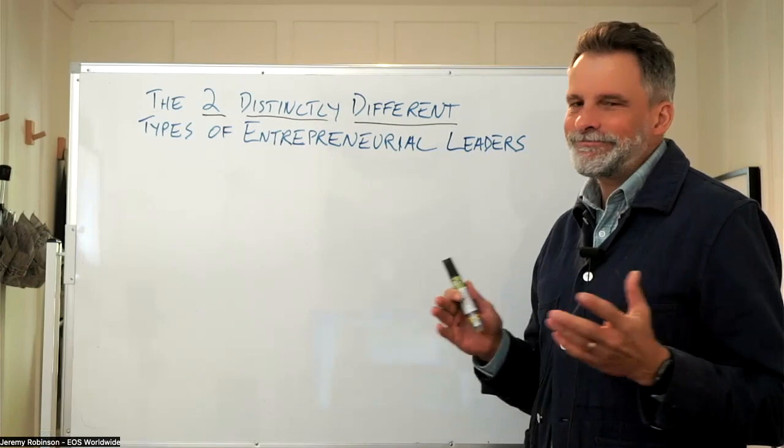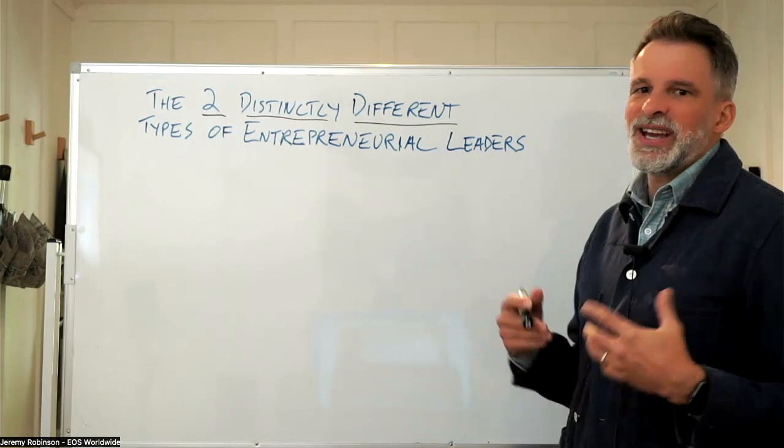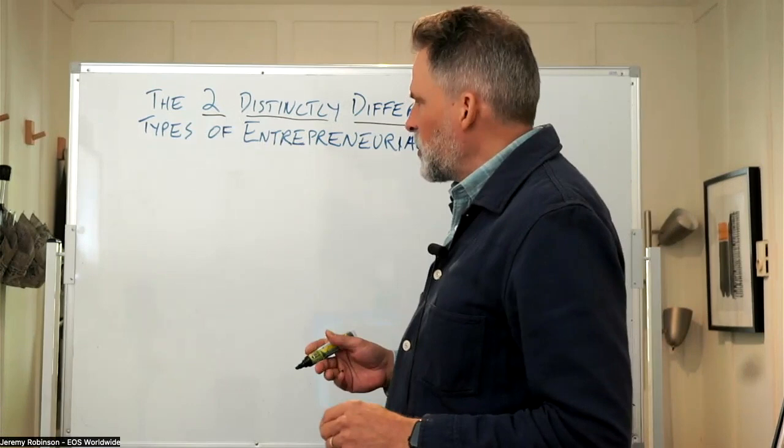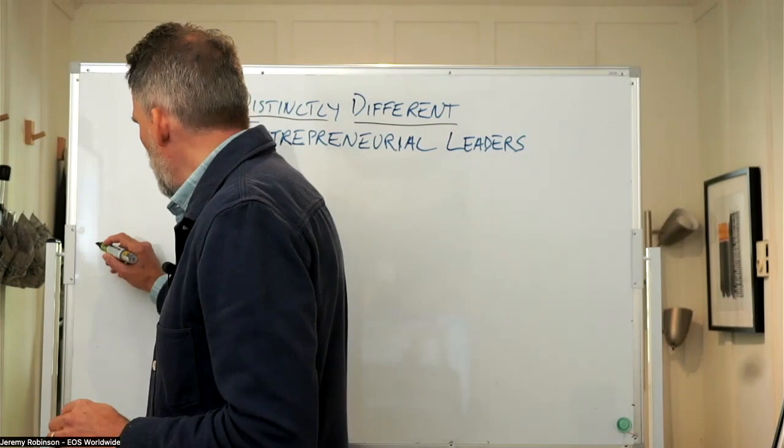The tool I want to use to demonstrate this is something called the accountability chart. It's one of the foundational tools of the entrepreneurial operating system. The accountability chart allows us to strip away people and titles and really focus on what's the right structure for an organization.